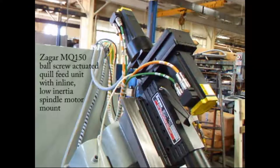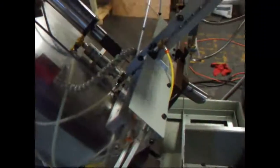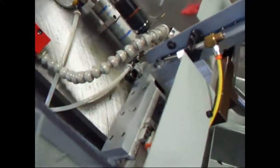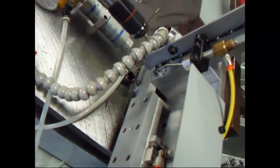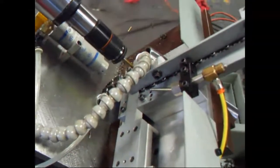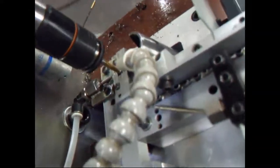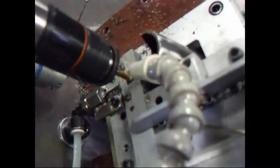The tapping unit is the Zagar MP150 ball-screw actuated unit with an inline low-inertia spindle motor mount. This standard configuration of the MP150 unit and its control system have been used in production to synchronize the tapping operations at production rates as high as 240 parts per minute or four cycles per second.